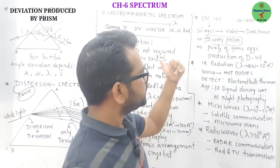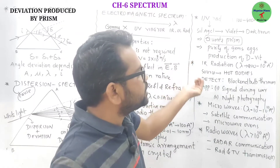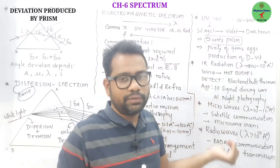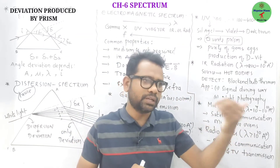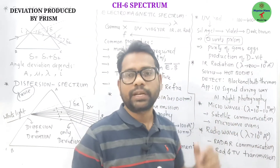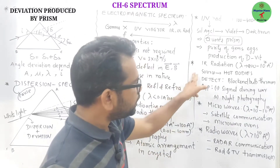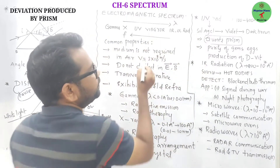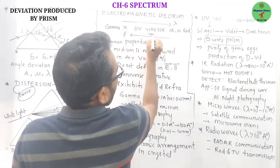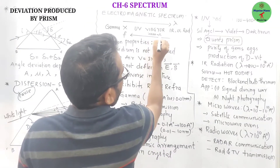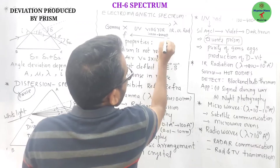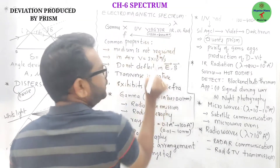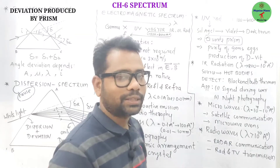The applications of UV radiation include checking the purity of gems and eggs, production of vitamin D, and sterilization of surgery tools. Between UV and infrared, we have VIBGYOR. The wavelength range of VIBGYOR is 4000 angstroms to 8000 angstroms. The use of VIBGYOR is that it makes things visible — without it, we can't see things.